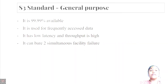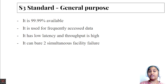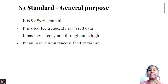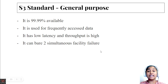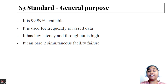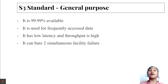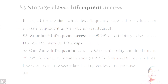The first storage class is S3 Standard General Purpose. It is 99.99% available, down for only 53 minutes every year. It is used for frequently accessed data — if your data is going to be frequently accessed, you should use this class. It has low latency and very high throughput, and it can bear two simultaneous facility failures.